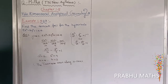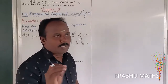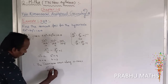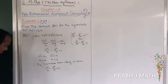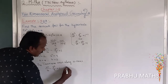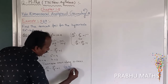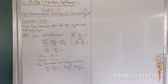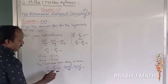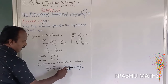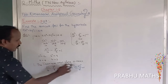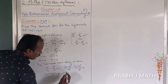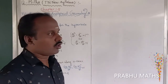The transverse axis is along the x-axis. Next, to find the center h comma k. The given equation is x squared over 16 minus y squared over 9 equals 1. The standard general form is (x minus h) squared over a squared minus (y minus k) squared over b squared equals 1. Comparing the two equations, there is no h or k shift, so h equals 0 and k equals 0. The center (h, k) is (0, 0).